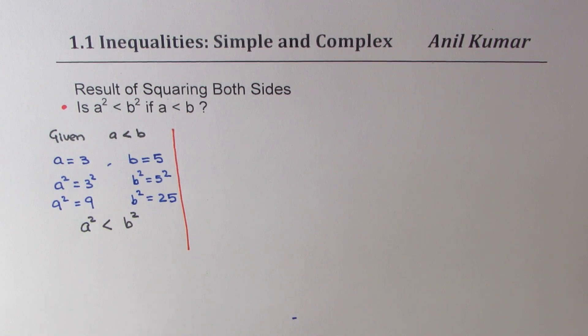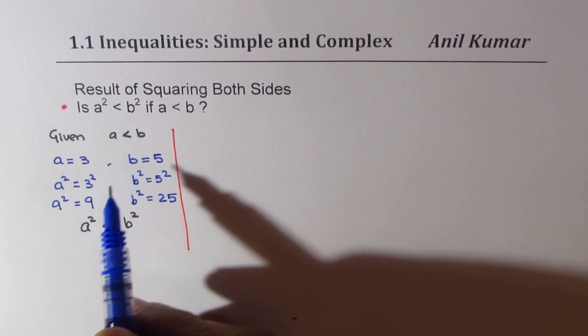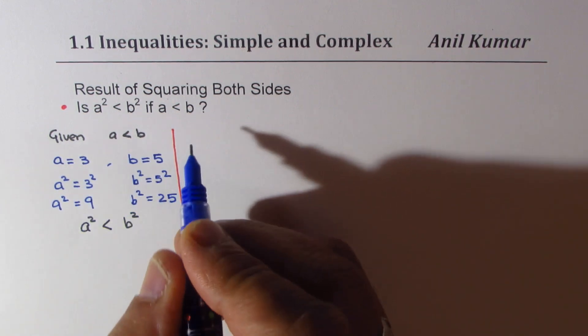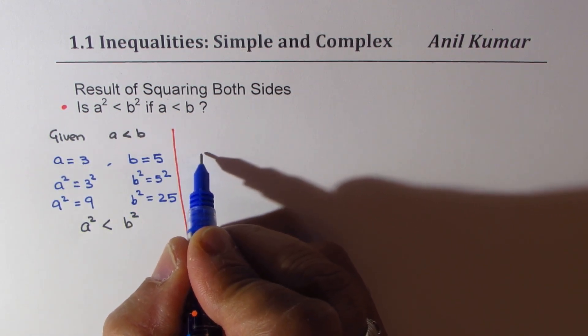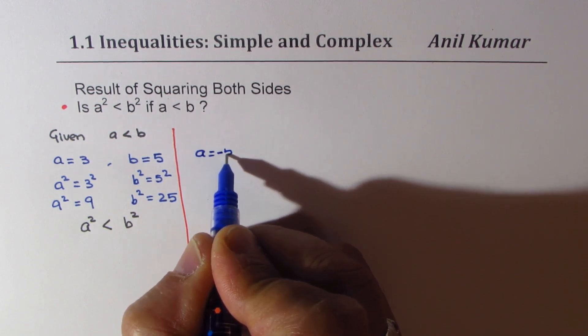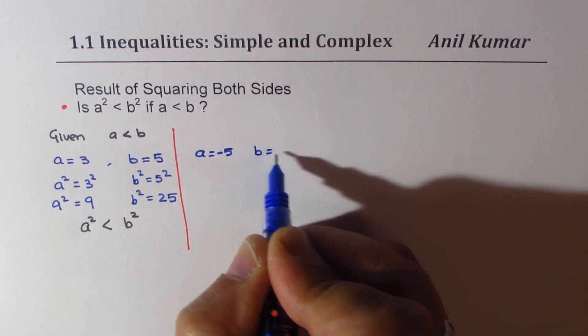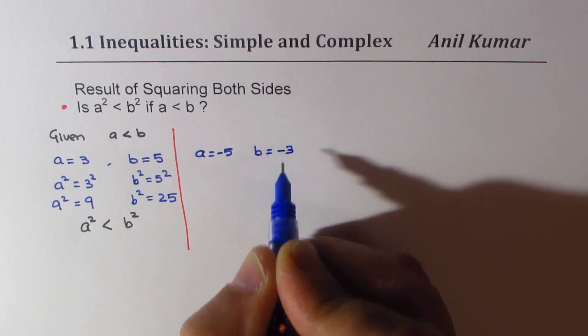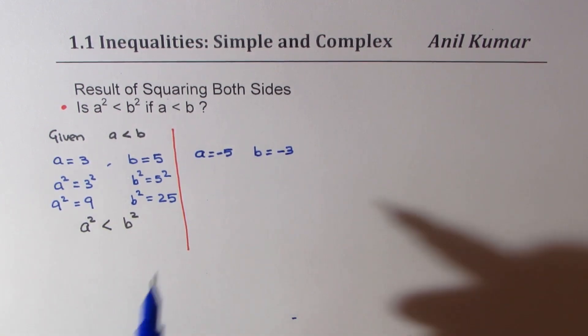Now, let's take another example. That is to say, let me reverse the situation, and this time, let me take a as -5, and b as equal to -3. Now, in this case, if I square,